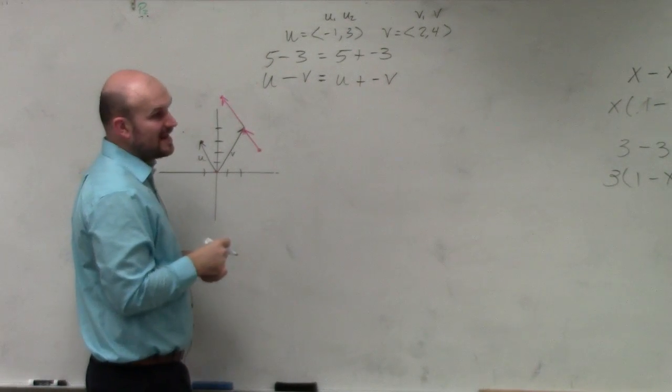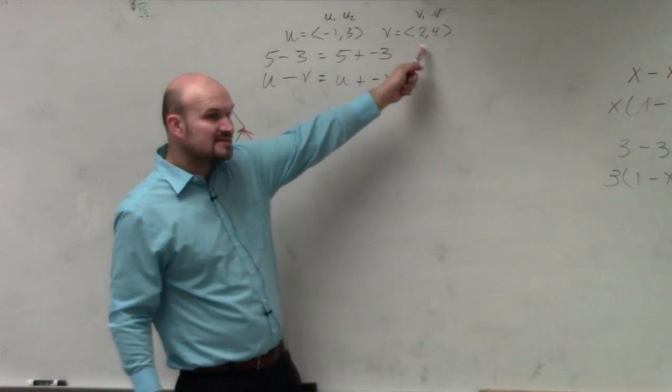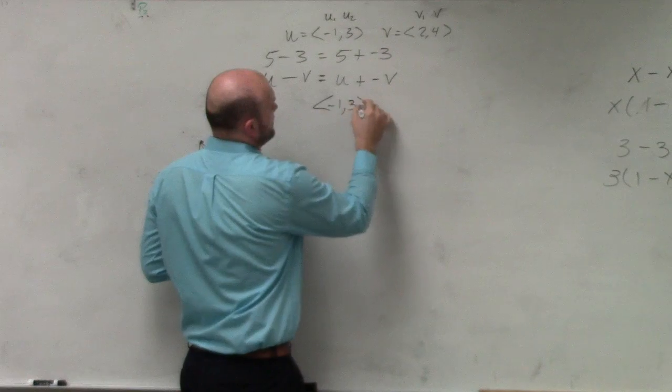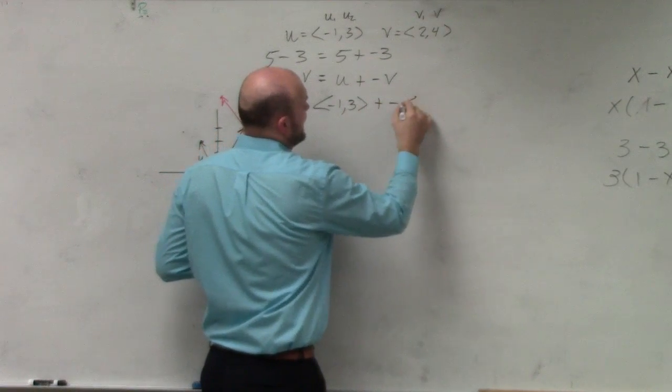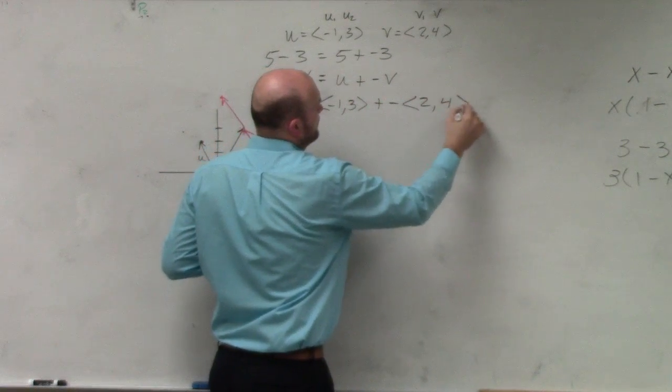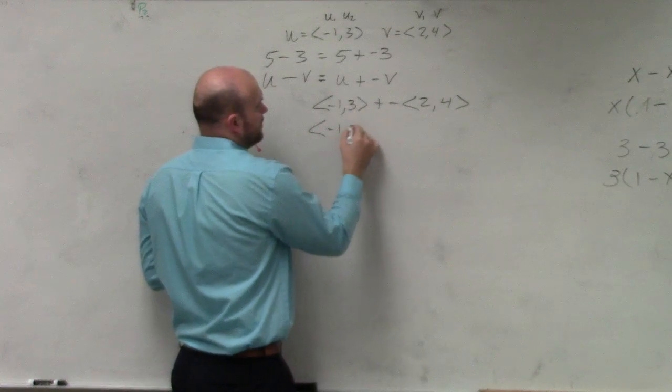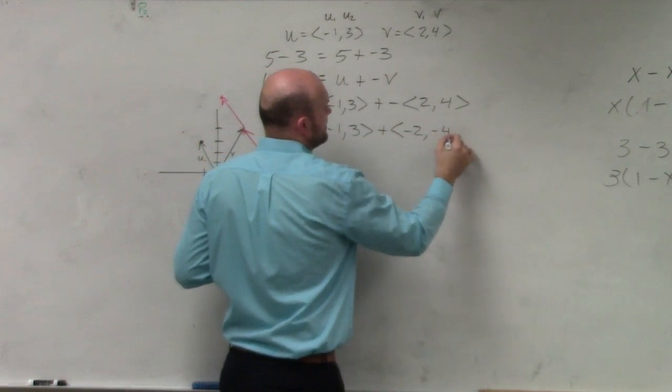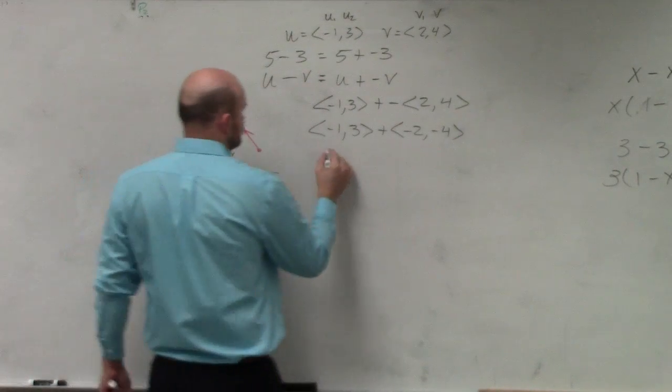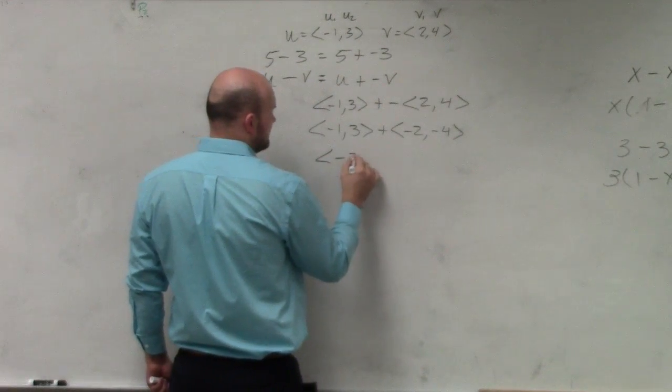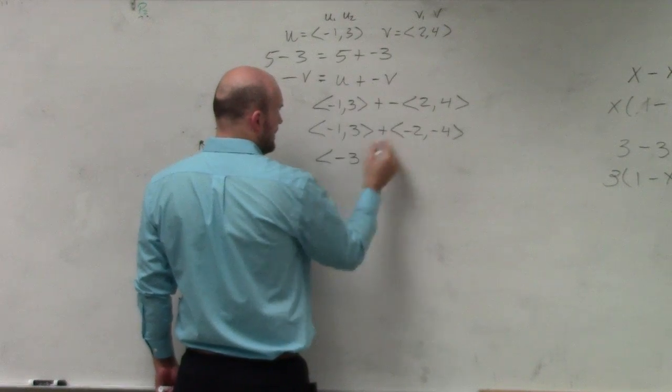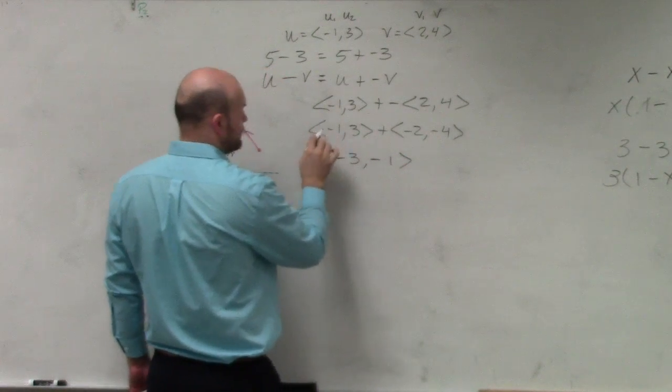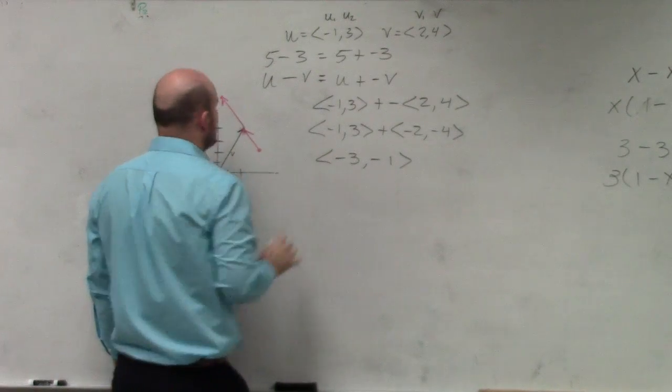So what that means now is now I have a scalar outside of my v. So I have negative 1 comma 3 plus a negative 2 comma 4, which is really negative 1 comma 3 plus negative 2 comma negative 4. Now I do the exact same thing. So now I'm doing negative 3, and this was negative 1. No, that's not right.